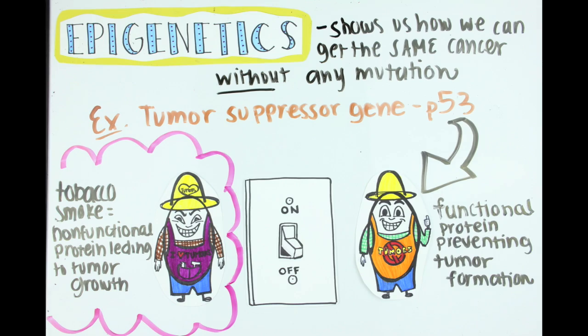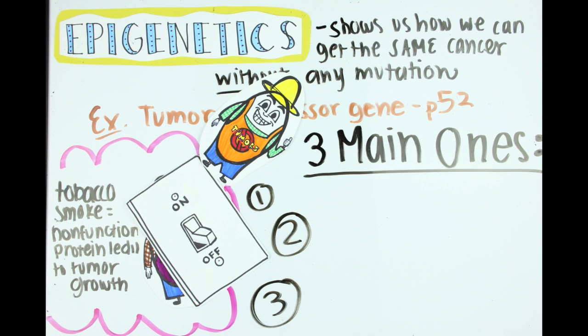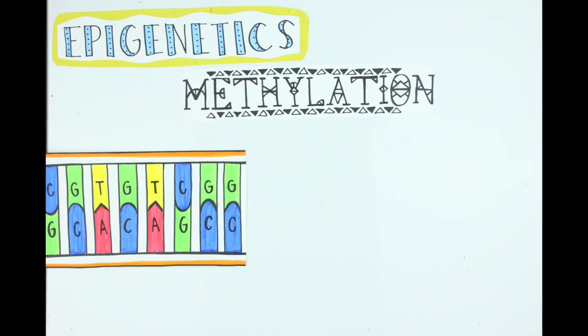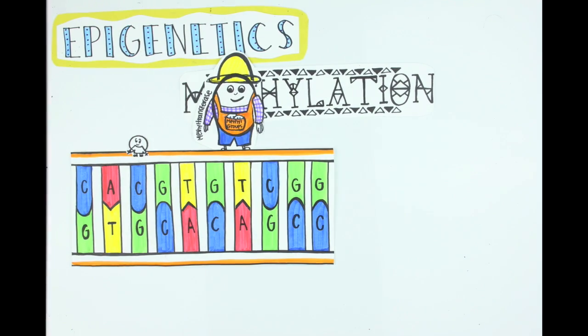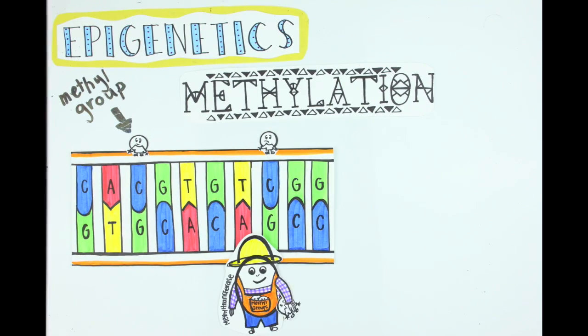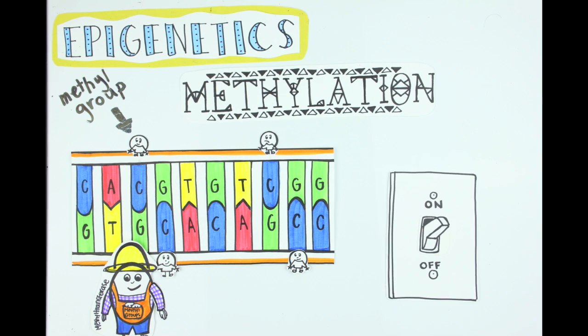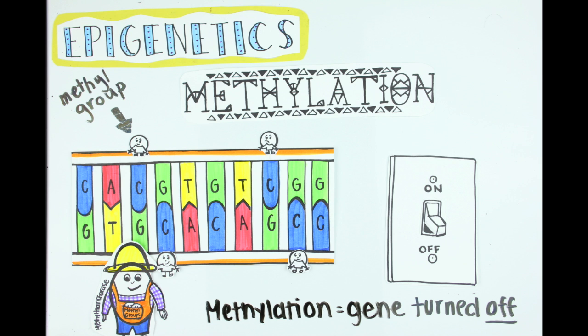But there are many other ways that we can change gene expression without changing the DNA code. The three main ones are methylation, histone acetylation, and non-coding RNA. Methylation mainly occurs when methyl transferase enzymes add a little molecule called a methyl group to DNA. This most commonly occurs on cytosines that are located next to guanine nucleotides, known as CpG islands. When this happens, it's like turning the gene off.